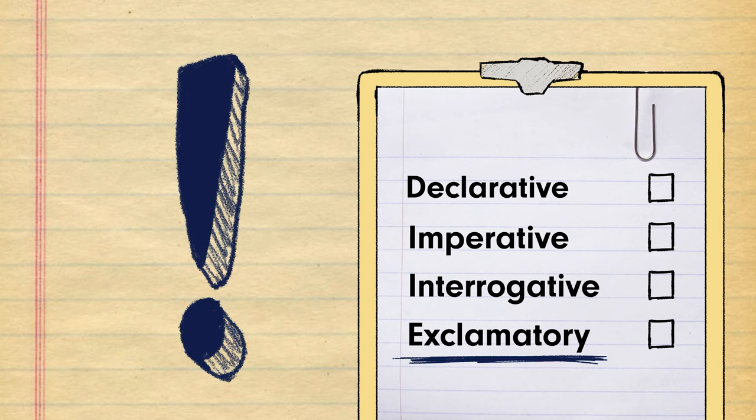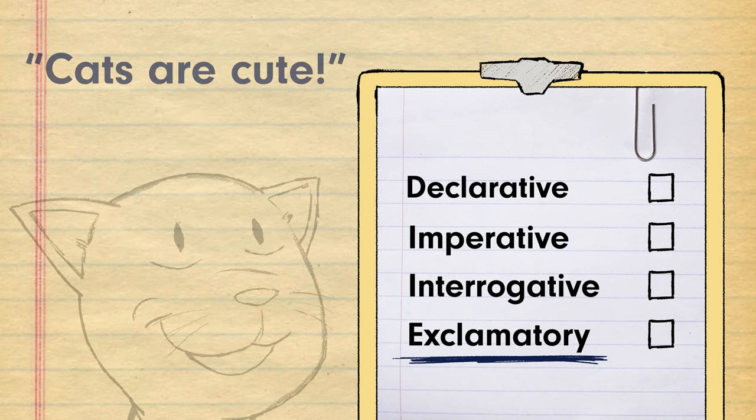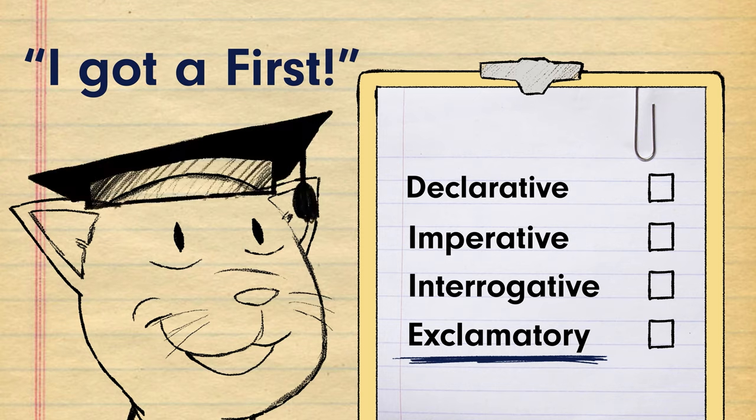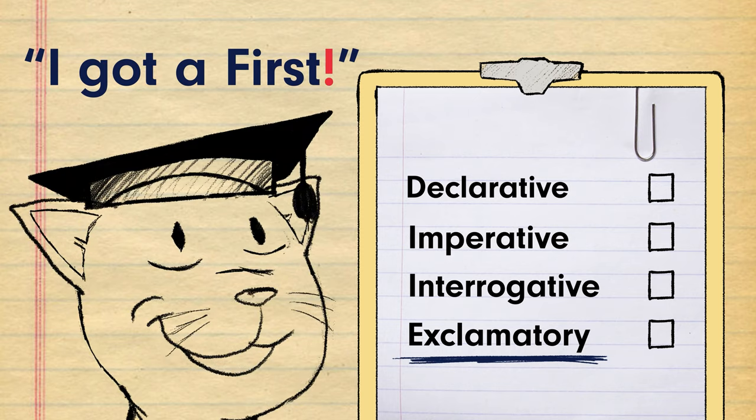An exclamatory is an exclamation. This could be cats are cute or I got a first. Exclamatory sentences are usually identified with the use of an exclamation mark.